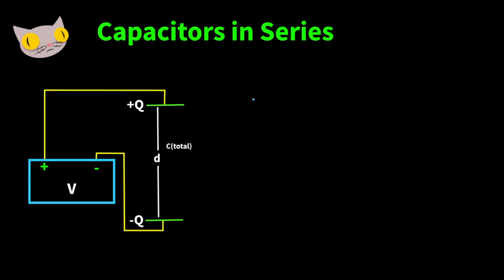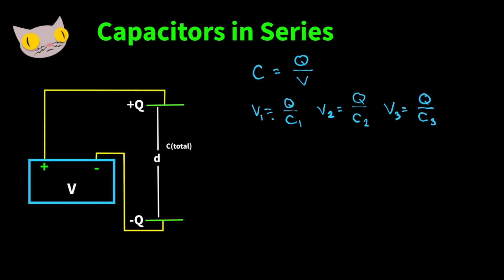We can find the expression for total capacitance by first considering the voltage across individual capacitors. Capacitance C is equal to charge Q over voltage V. And if we rearrange for voltage we get voltage equals charge over capacitance. So the voltages across the individual capacitors would be V1 equals Q over C1, V2 equals Q over C2, and V3 equals Q over C3.